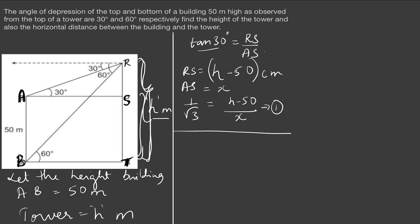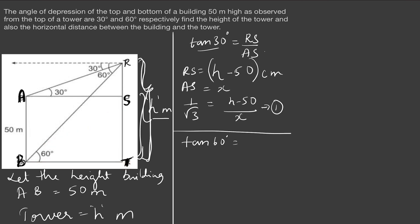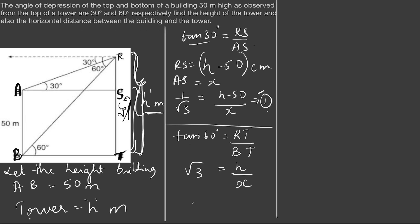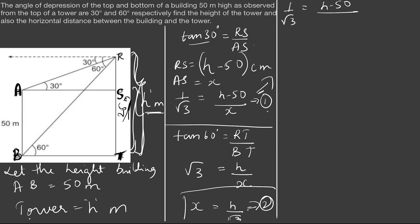Now considering tan 60 from triangle BRT: opposite by adjacent is RT/BT. RT is the height of the tower h, and BT is x. So tan 60 = √3 = h/x, giving us equation 2: x = h/√3. Substituting equation 2 into equation 1: 1/√3 = (h − 50) / (h/√3), which simplifies to (1/√3) × (h/√3) = h − 50.